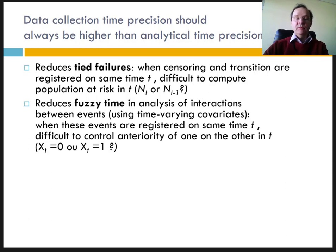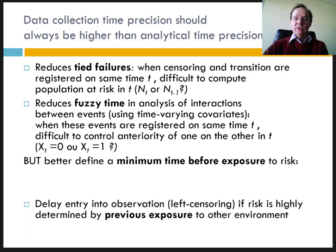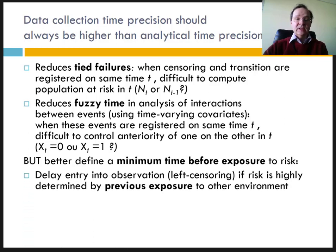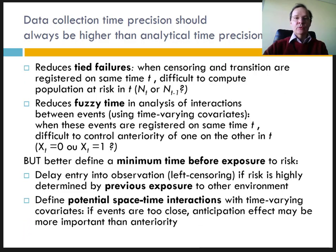However, it is best to set a minimum time for exposure to risk. For example, it may be useful to shift the entry into observation if the risk is strongly conditioned by exposure to another environment. For instance, if you analyze mortality, it may be wise to exclude the first six months after immigration, because the deaths during this period are probably due to the exposure to risk in the environment of origin and not in the study area of destination. When events are very close to each other, it is quite possible that anticipation effects bias the relationship between these two events. It may be useful to anticipate one of the events by a few months or weeks to check if the effect of this event on the other remains the same.